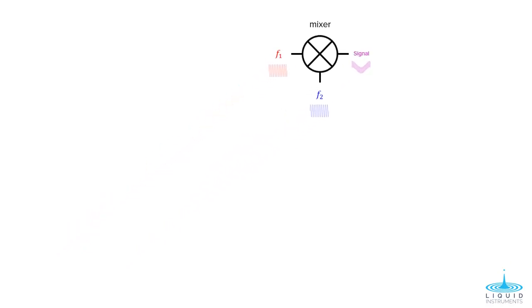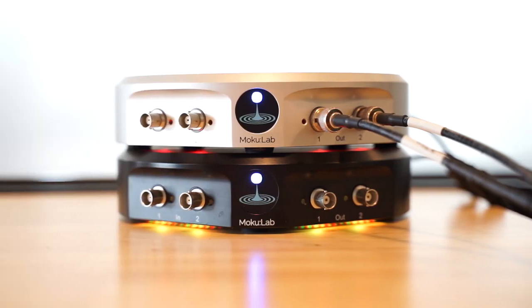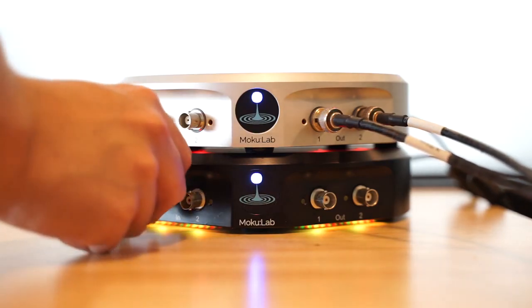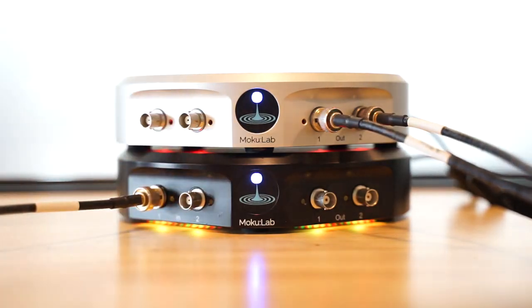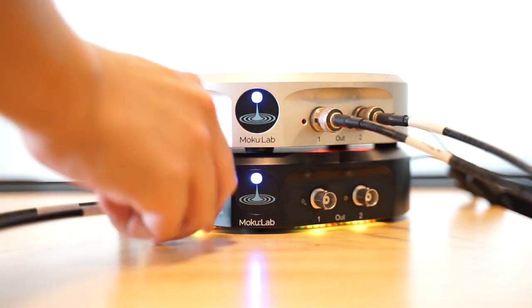Let's show this process in action with Moku Lab. First, we set up two Moku Labs. We will operate the silver Moku as a waveform generator to produce our signal and local oscillator f1 and f2. Then, the black Moku will operate as a lock-in amplifier instrument to perform the signal mixing or heterodyne function.